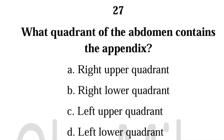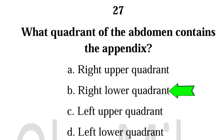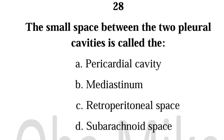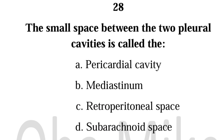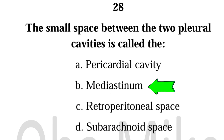Number 27. What quadrant of the abdomen contains the appendix? Number 28. The small space between the two pleural cavities is called the mediastinum.